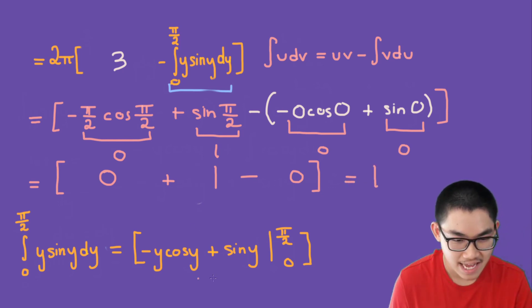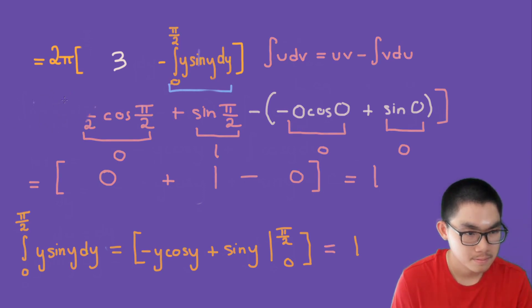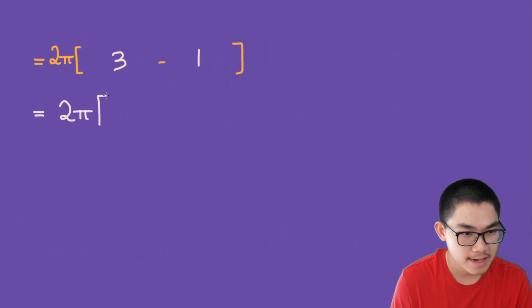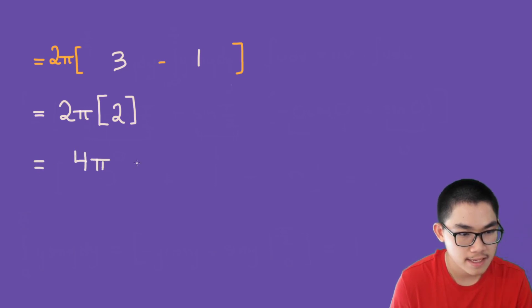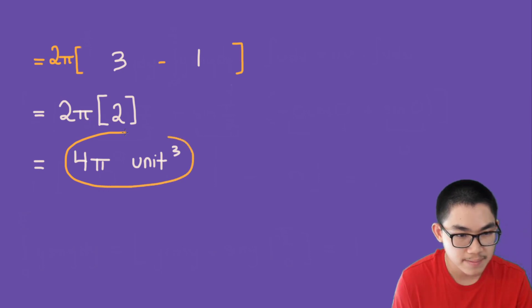Combining the results: 2π times (3 − 1) = 2π times 2 = 4π cubic units. This is the volume of our three-dimensional object.